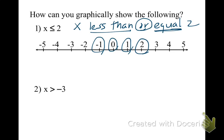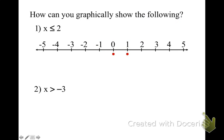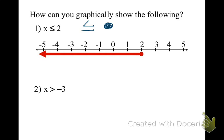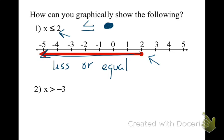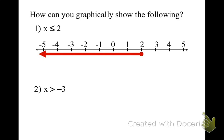Watch how this graph is going to look. We have one, zero, two, negative one — a whole bunch of different possible answers. We're not sure what x will equal, but it can be anything smaller than 2 — one and a half, one and three-fourths. Since we have a less than or equal to sign, when graphing it's going to be a solid dot, because 2 is a possible answer. That's why it's a solid dot and we're going in the negative direction, because x has to be smaller than 2.